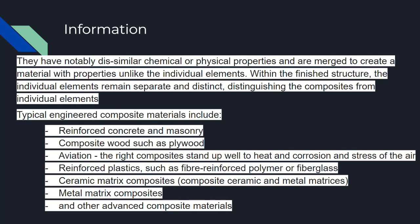Unlike the individual elements, the individual elements remain separate and you can distinguish them in the composites. Some engineered composites include reinforced concrete or masonry composites, and wood such as plywood.